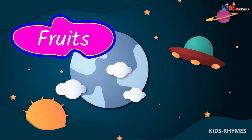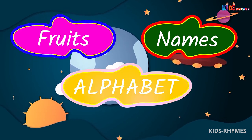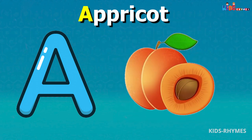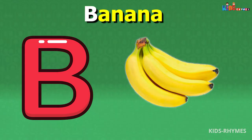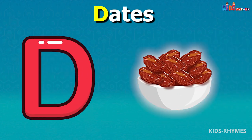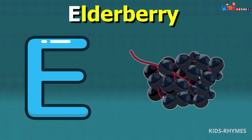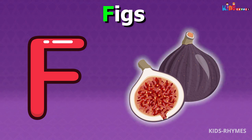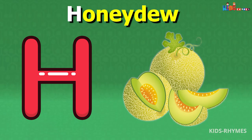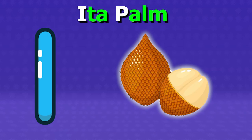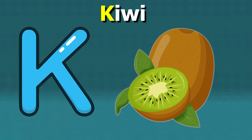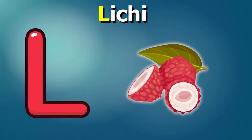Fruits name according to alphabets. A for Apricots, B for Bananas, C for Cherries, D for Dates, E for Elderberries, F for Figs, G for Grapes, H for Honeydew, I for Indian Plum, J for Jackfruit, K for Kiwis, L for Lychees.